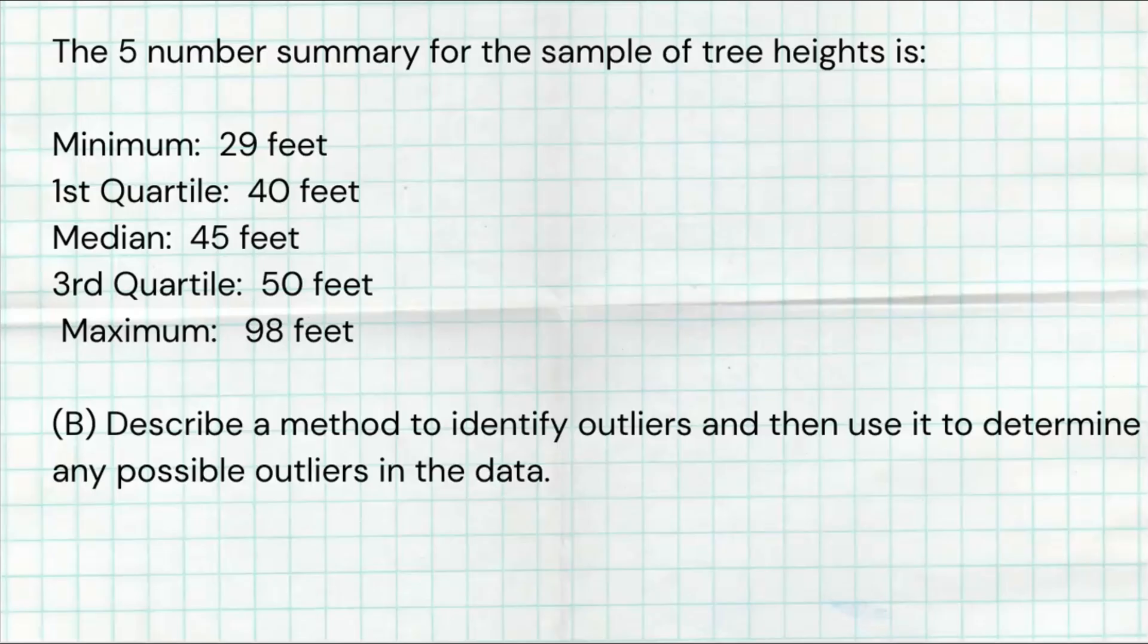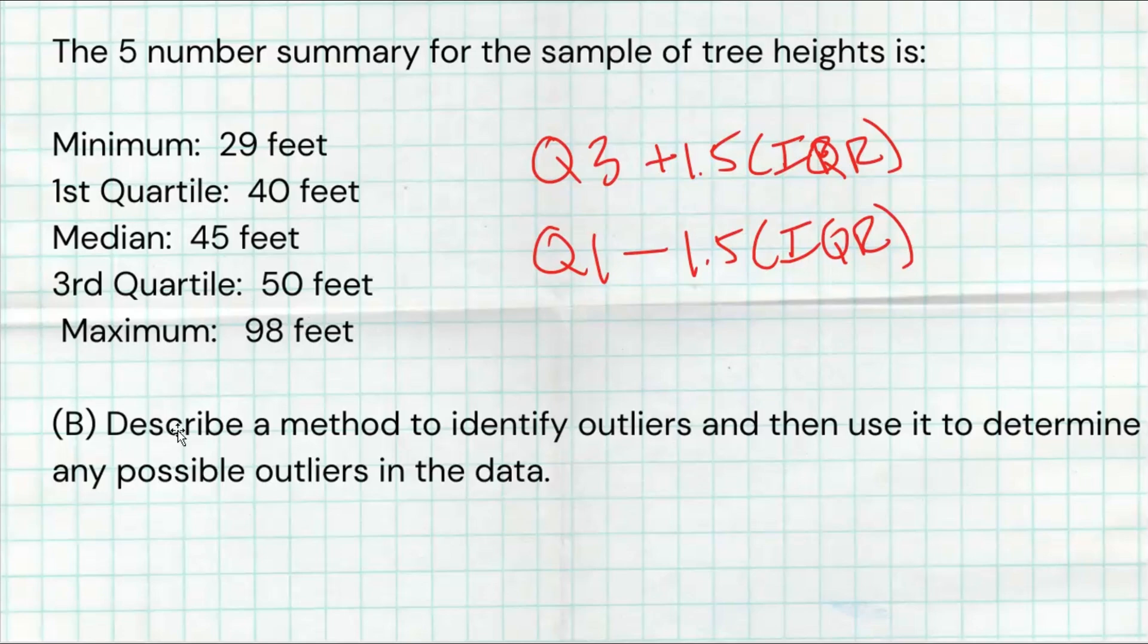The next part of this problem gives us the five-number summary: the min, the first quartile, the median, the third quartile, and the max. The question says to describe a method to identify outliers and then use that to determine any potential outliers. A lot of people use the idea that up or down two standard deviations from the mean could help you find outliers. But we don't know the mean, nor do we know the standard deviation from this data, but we do know the quartiles. So what I'm going to recommend is using your fences. The upper fence is Q3 plus 1.5 times the IQR, and the lower fence is Q1 minus 1.5 times the IQR. Any values outside of these fences are going to be deemed outliers. But notice how it says not just to do it, it says to describe a method. So we actually have to use some words to describe what it is we did.